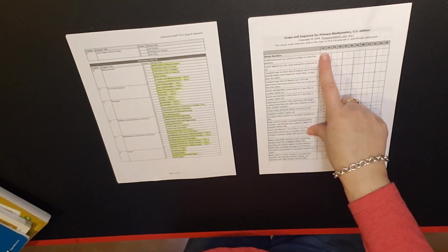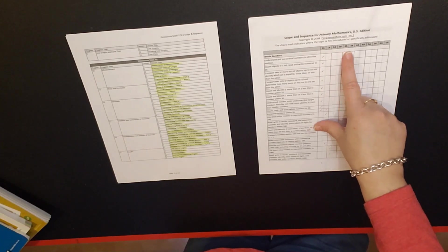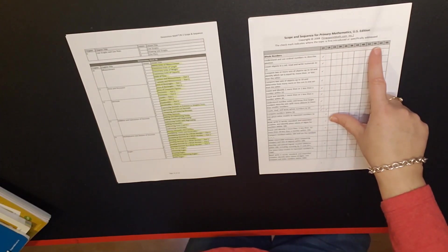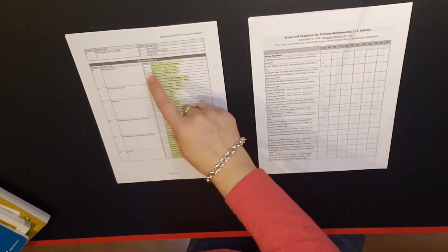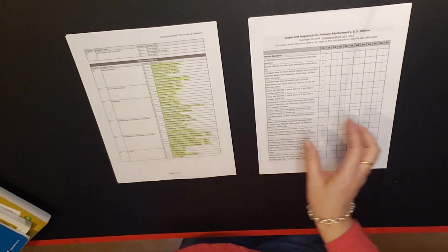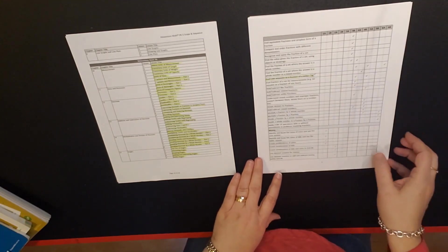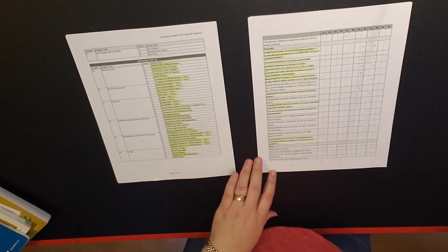For primary the way they have it set up is on the top here would be what level, what books you're looking at, whereas dimensions all I had to do was go to math 4B and I could print out everything.